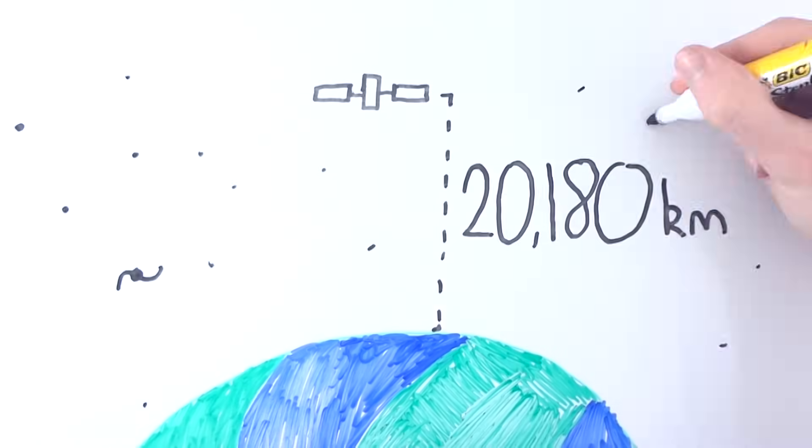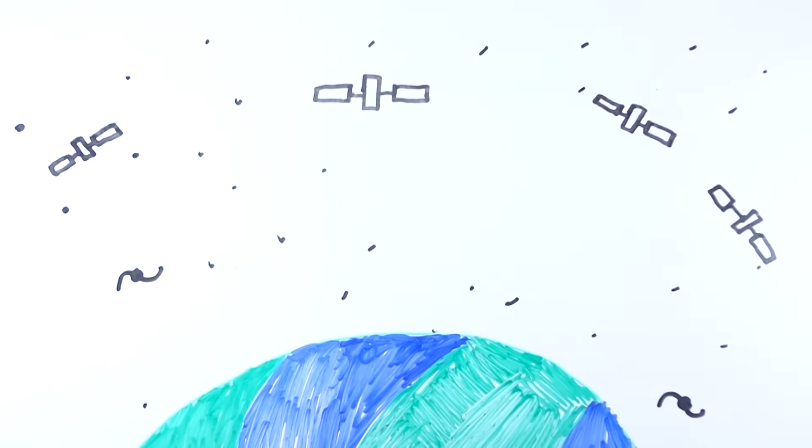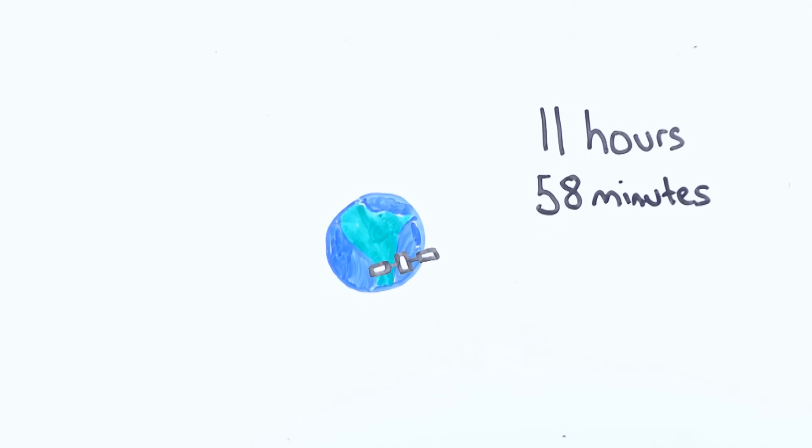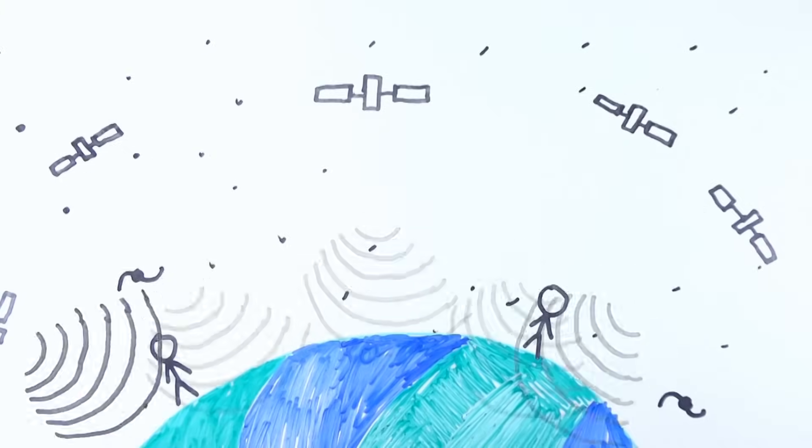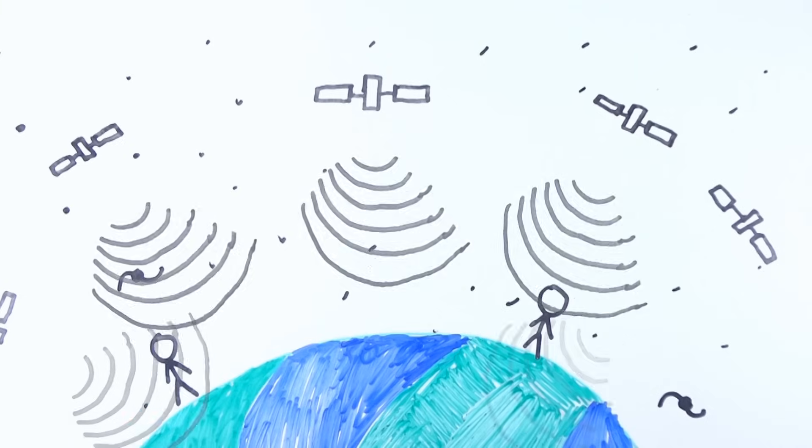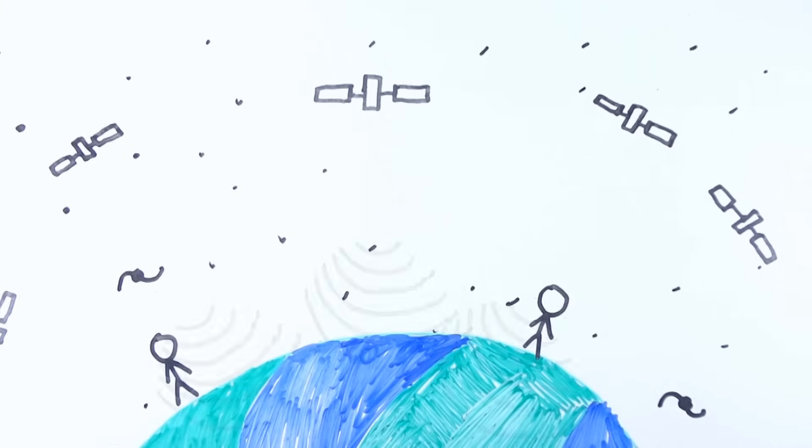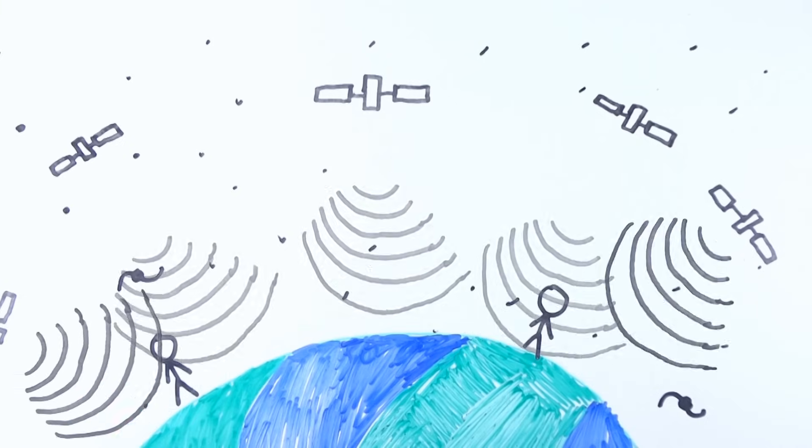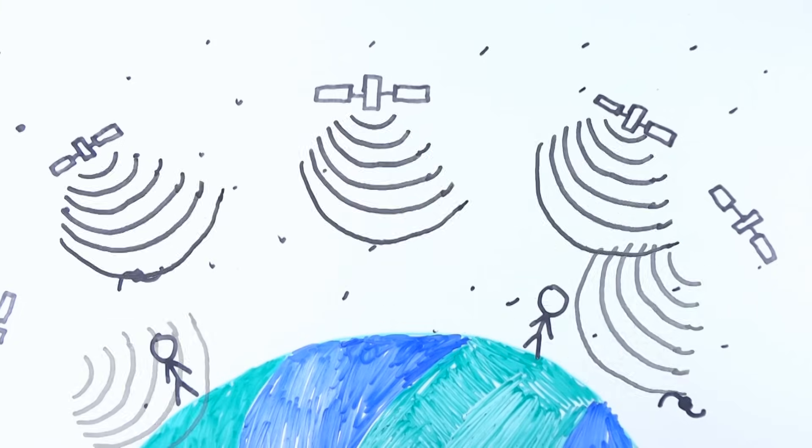At over 20,000 km above sea level is a constellation of satellites, each orbiting Earth every 11 hours and 58 minutes. These satellites are continuously beaming data down to us on Earth, which is received by devices such as your phone or navigational units in your cars, allowing you to see where you are on the planet.